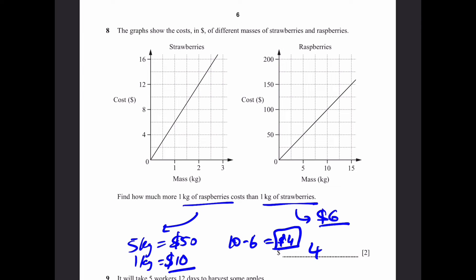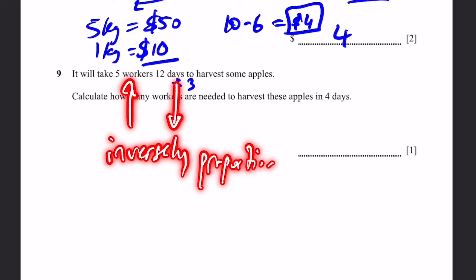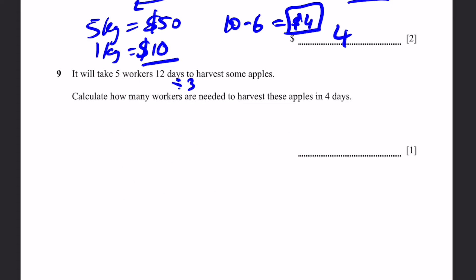Question 9. It will take 5 workers 12 days to harvest some apples. Calculate how many workers are needed to harvest these apples in 4 days. Logically, if you have a higher number of workers, the number of days required will decrease. We want this to decrease by 3, or we're dividing this by 3. If one increases and the other decreases, they are inversely proportional. Therefore, if one is divided by 3, the other has to be inversed, multiplied by 3. So that's going to be 5 times 3, which is 15 workers.